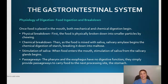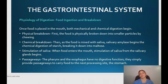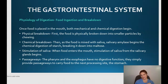Regarding the physiology of digestion: once food is placed in the mouth, both mechanical and chemical digestion begin. Mechanical breakdown involves chewing food into smaller particles. Chemical breakdown begins when food is mixed with saliva, where salivary amylase initiates chemical digestion of starch — so starch begins to be broken down in the mouth. When food enters the mouth, stimulation of saliva from the salivary glands begins. The pharynx and esophagus have no real digestive function; they simply provide a passageway carrying food from the mouth to the stomach.